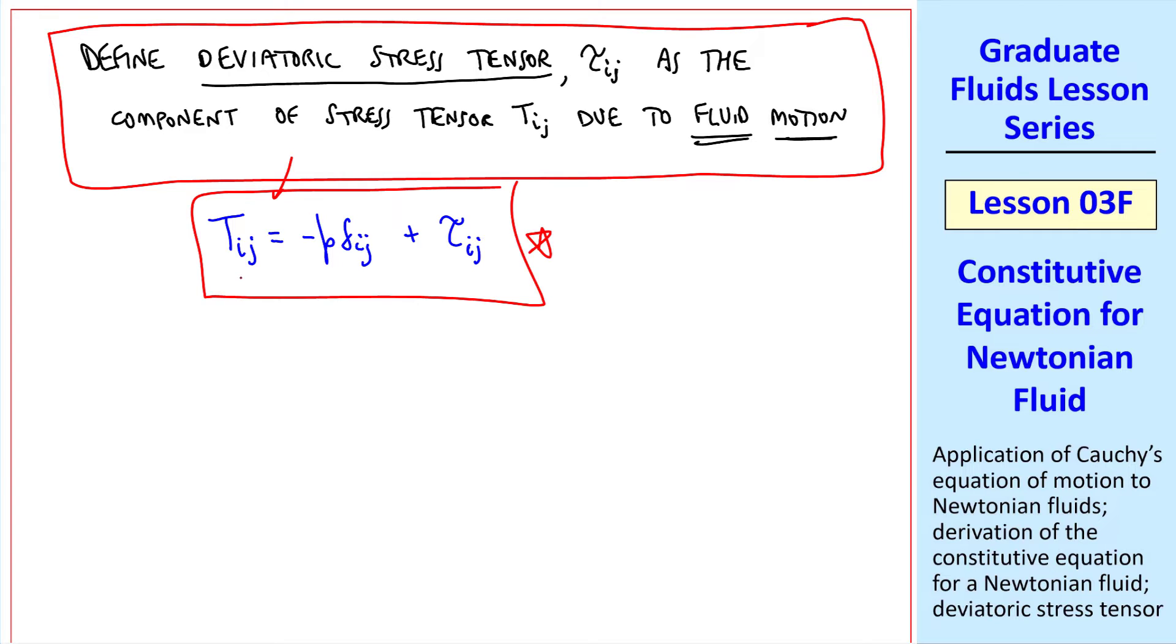So Tij is equal to negative P deltaij plus this so-called deviatoric stress tensor, tauij. I'll label these terms. This is the total stress. This is the hydrostatic stress that's always there, even when the fluid is at rest. And this is the deviatoric stress due to fluid motion. Total stress is equal to these two parts.